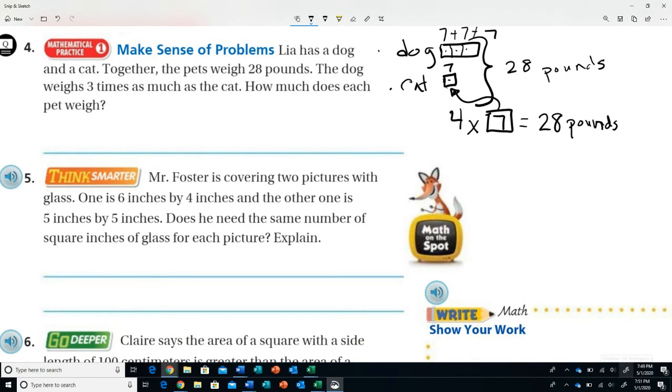Moving on to question number five. Mr. Foster is covering two pictures with glass. One is 6 inches by 4 inches and the other one is 5 inches by 5 inches. Does he need the same number of square inches of glass for each picture? Explain. I think a quick diagram of this picture should help you pretty quickly. So if his first frame is 6 inches by 4 inches and his second frame is 5 inches by 5 inches, if you do the math for area, you will find your answer. I'm going to leave this to you to finish it up. It is pretty simple. I think most of you would be able to look at this and know the answer right away.